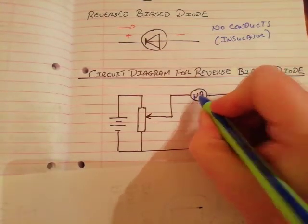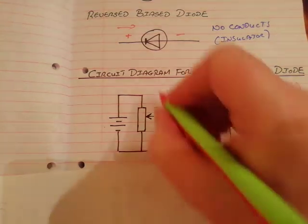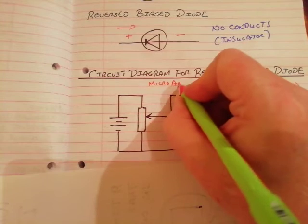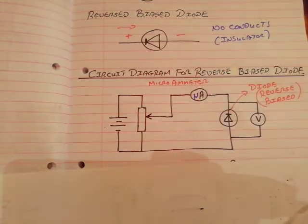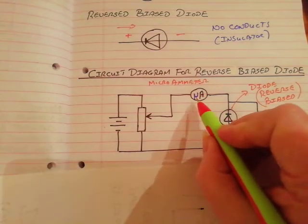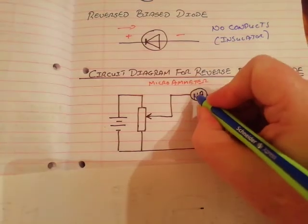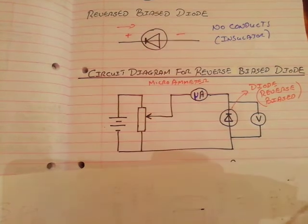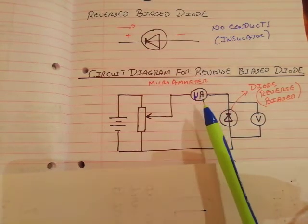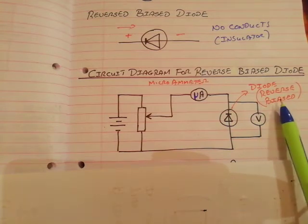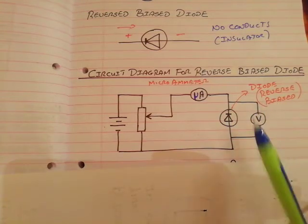A microamp is one millionth of an amp — ten to the power of minus six. So the microammeter measures millionths of an amp, not millions of amps. It will measure incredibly small currents, because if you reverse bias a diode it actually does allow a tiny current to flow through it.